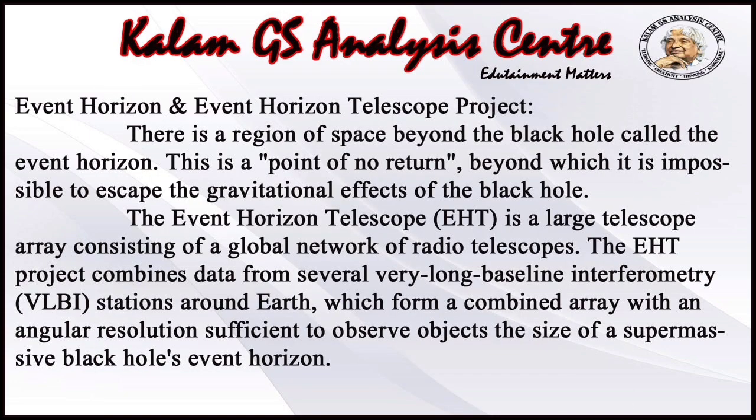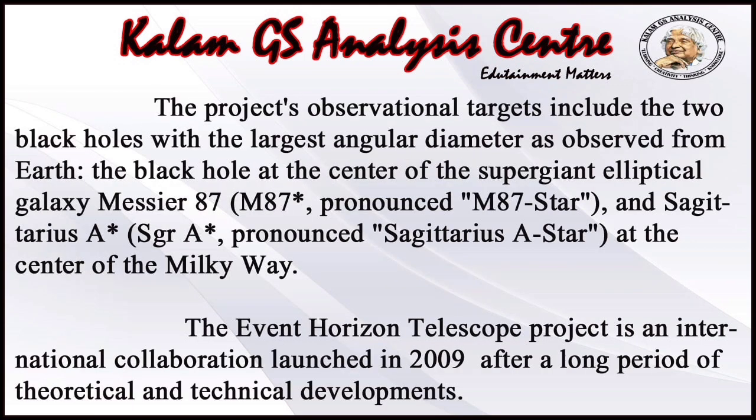जो form करती है एक combined array with an angular resolution sufficient to observe objects the size of a supermassive black hole's event horizon। Project की observational targets में पृथ्वी से देखे गए सबसे बड़े angular diameter वाले दो Black Holes शामिल हैं: M87 Star का Black Hole और Milky Way Galaxy का Sagittarius A Star। Event Horizon Telescope Project, theoretical and technical developments की लंबी अवधि के बाद 2009 में शुरू किया गया एक अंतराष्ट्रीय सहयोग है।